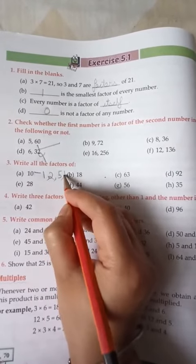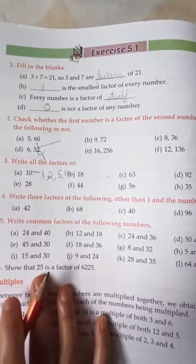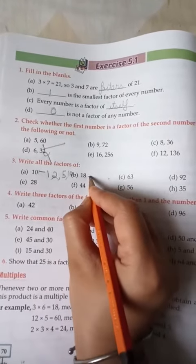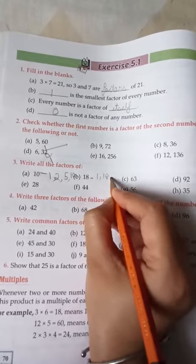Now, in the 2 table, 5 also comes. 10 also comes in the 5 table. It also comes, and 10 is also the factor of 10. In this way you have to do these questions.